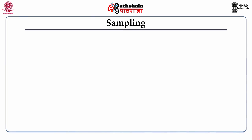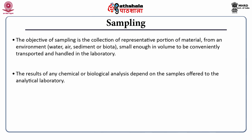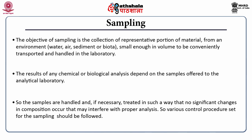So what is sampling? The objective of sampling is the collection of a representative portion of material from any environmental matrix — that may be water, air, sediment or biota — small enough in volume to be conveniently transported and handled in the laboratory for the purpose of analysis. The results of any chemical or biological analysis depend on the samples offered to the laboratory. Samples are handled and, if necessary, treated so that no significant changes in composition occur that may interfere with proper analysis, and various control procedures set for sampling should be followed.